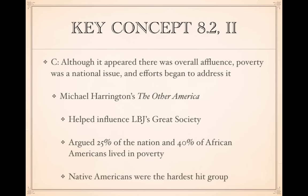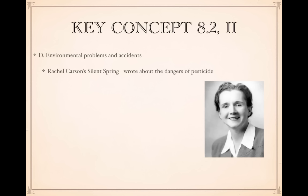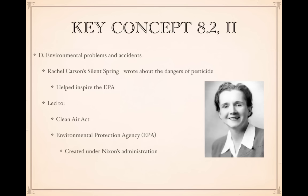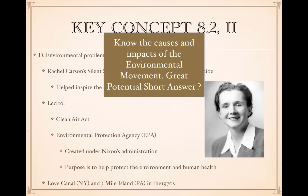Environmental problems and accidents occurred especially in the 1960s and 1970s. In the 1960s, Rachel Carson wrote the influential book Silent Spring, warning about the dangers of pesticides especially in the water system. This helped inspire the creation of the Environmental Protection Agency and the Clean Air Act under President Nixon's administration. In the 1970s, two major environmental disasters occurred: Love Canal in New York near Niagara Falls, and Three Mile Island, a nuclear power plant disaster in Pennsylvania. These led to government legislation to help those communities. Know the causes and impacts of the environmental movement — it's a great potential short answer question.